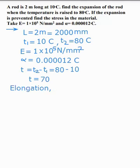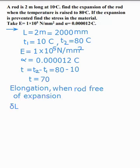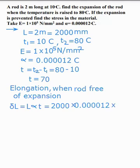Next, elongation when the rod is free to expand. Delta L is equal to L × alpha × T. So L is 2000, alpha is 0.000012, and T is 70 degrees. Therefore delta L is equal to 1.68 mm.